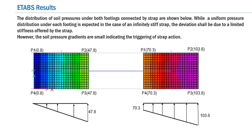Now let us discuss the ETABS results, specifically the soil pressures below both footings. The distribution of soil pressures under both footings connected by the strap is shown. For footing F1, the pressures at the corners are: left corners P1 and P4 at 0.8 kN/m², and right corners at 47.8 kN/m². Footing F1 is thus subject to a smaller pressure, and importantly, the pressure gradient — the difference in pressure — is only about 47 kN/m², which is relatively small.